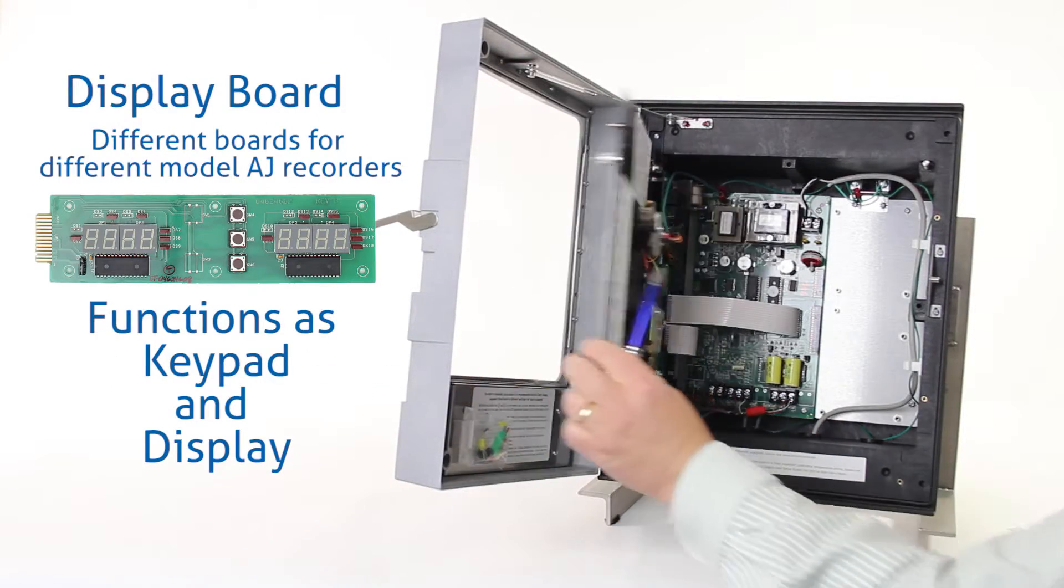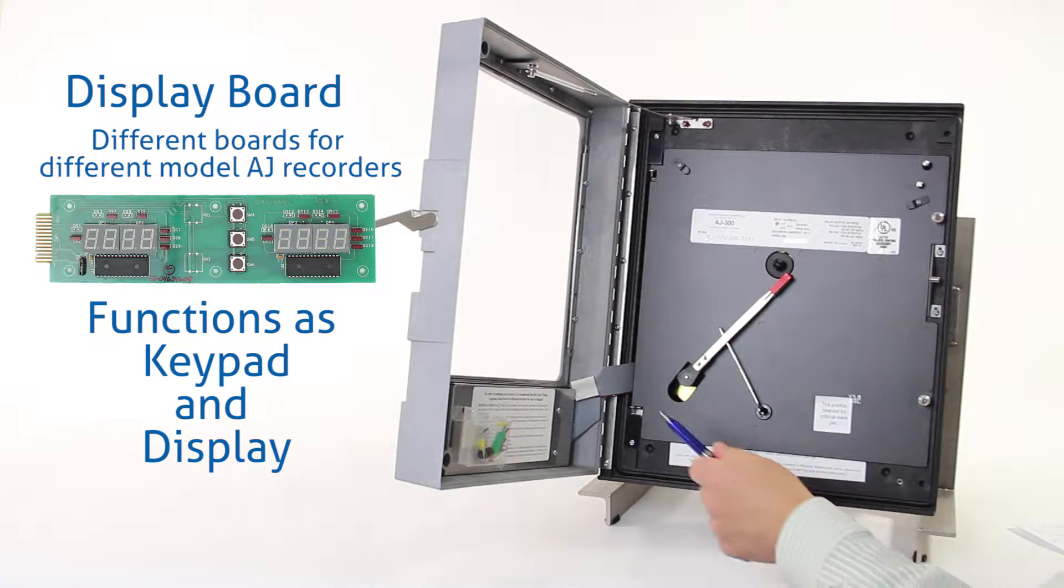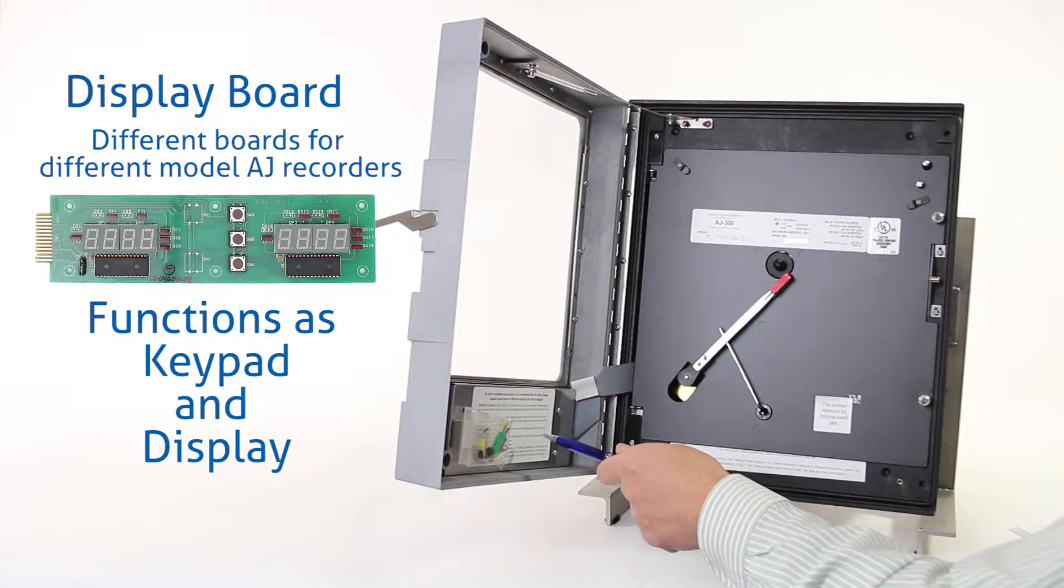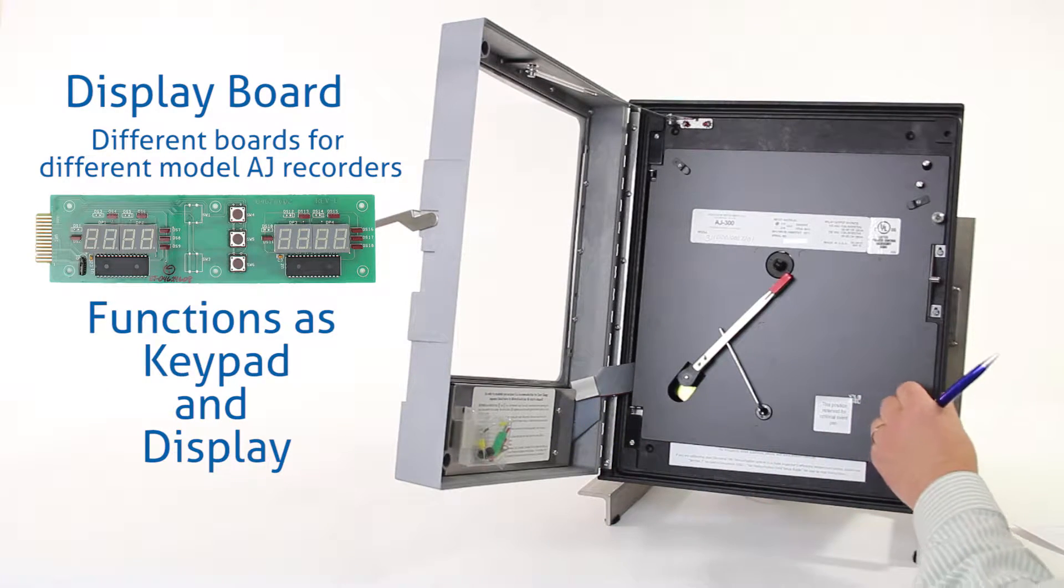The display board is located in the front door assembly behind this stainless cover on the back side of the front door, and the display functions as the keypad and the display.